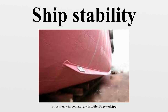Anti-roll tanks are tanks within the vessel fitted with baffles intended to slow the rate of water transfer from the port side of the tank to the starboard side. The tank is designed such that a larger amount of water is trapped on the higher side of the vessel, intended to have an effect completely opposite to that of the free surface effect. Paravanes may also be employed by slow-moving vessels to reduce roll.